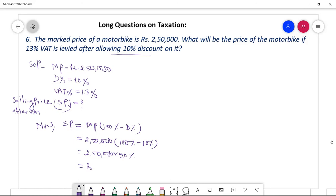2 lakhs 50,000 times 90 over 100. Therefore SPB equal to Rs 2 lakhs 25,000, that's good. Thank you, 2 lakhs 25,000, this is selling price. Thank you so much, this is the selling price.